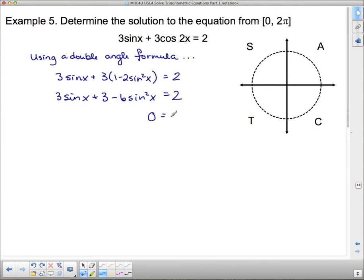So I get 6sin²x, and I'm going to have a -3sin(x), and then this 3 subtracts on both sides to give me a -1.